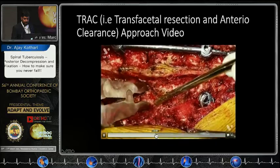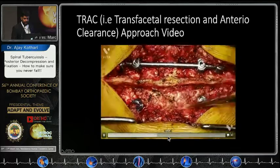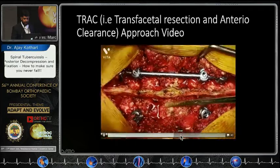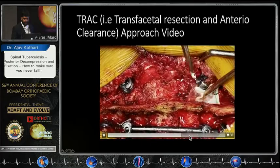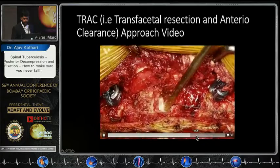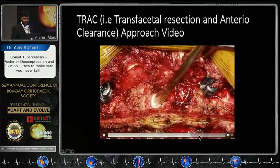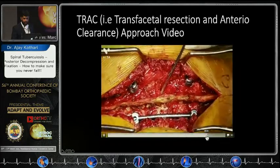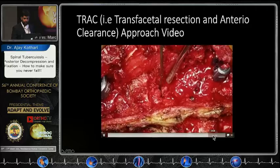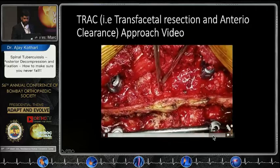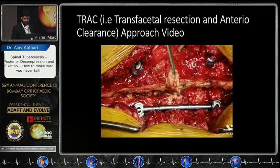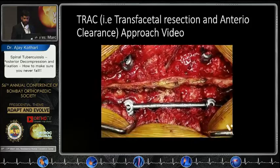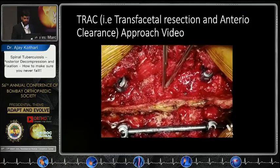Running the video: the rod is fixed on one side, we go from the facet, take the facet out, and here you can see the disease coming out. You can do a complete job, place bone chips and bone grafts, and you do not need to do anterior reconstruction — making failure much less likely.